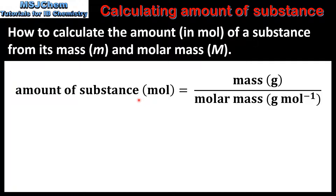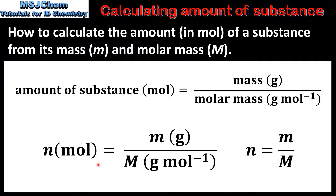The equation is: amount of substance in moles equals the mass of the substance divided by its molar mass. The unit for mass is usually grams and molar mass is grams per mole. This can also be written as n equals lowercase m divided by uppercase M, where n is amount in moles, m is mass in grams, and M is molar mass.